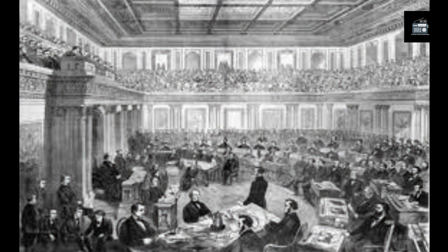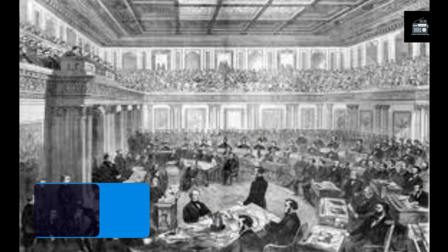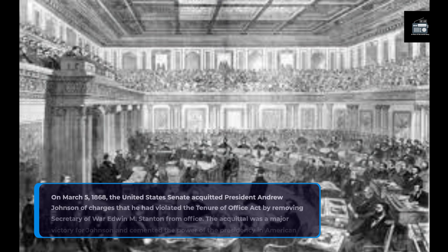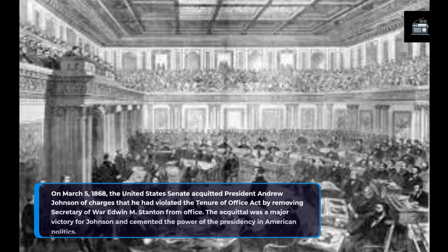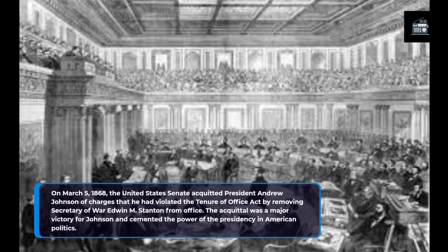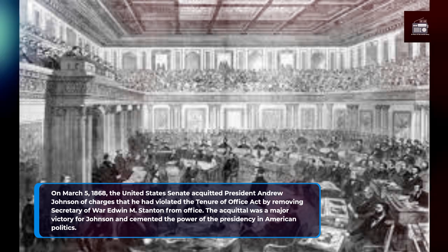On March 5, 1868, the United States Senate acquitted President Andrew Johnson of charges that he had violated the Tenure of Office Act by removing Secretary of War Edwin M. Stanton from office. The acquittal was a major victory for Johnson, and cemented the power of the presidency in American politics.